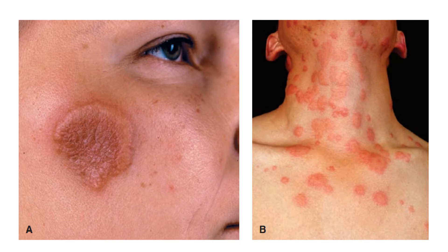This is another extensively involving lesion of Sweet syndrome in a 23-year-old female. There are multiple, some discrete and some coalescent, inflammatory and very exudative plaques. These appear wheel-like, especially around the neck where they are coalescing. This patient also had leukocytosis and fever.